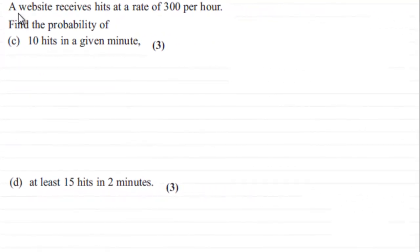Hi. Now, we're given that this website receives hits at a rate of 300 per hour. And in the previous part of the question, we were asked to say what distribution this followed, which was a Poisson distribution.